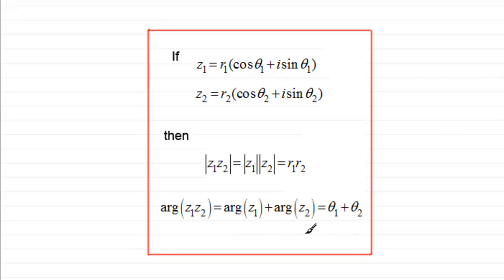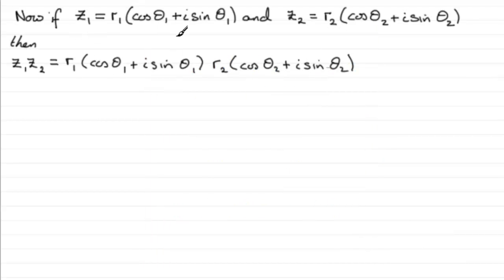This is something you need to remember, but if you're called upon to prove it, here's the proof. We take the two complex numbers: Z1 equals R1 times (cos theta 1 + i sine theta 1), and Z2 equals R2 times (cos theta 2 + i sine theta 2). Then we multiply them together.